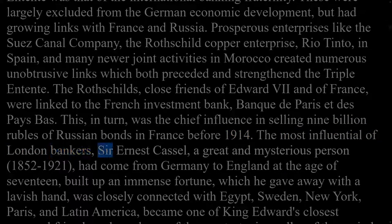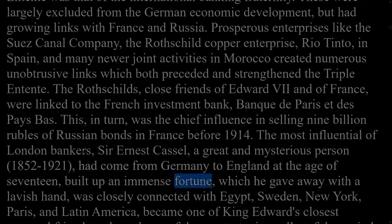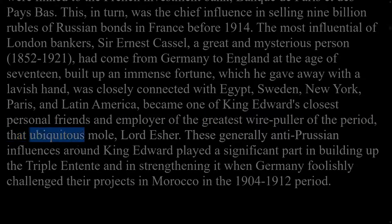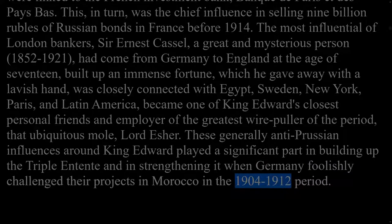The most influential of London bankers, Sir Ernest Cassel, a great and mysterious person (1852–1921), had come from Germany to England at the age of 17, built up an immense fortune which he gave away with a lavish hand, and was closely connected with Egypt, Sweden, New York, Paris, and Latin America. He became one of King Edward's closest personal friends and employer of the greatest wire-puller of the period, that ubiquitous mole, Lord Esher. These generally anti-Prussian influences around King Edward played a significant part in building up the Triple Entente and in strengthening it when Germany foolishly challenged their projects in Morocco in the 1904–1912 period.